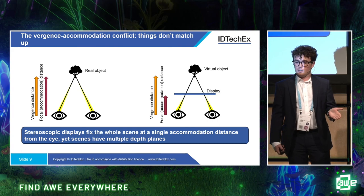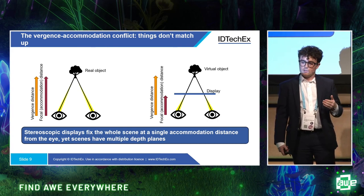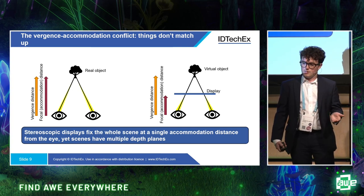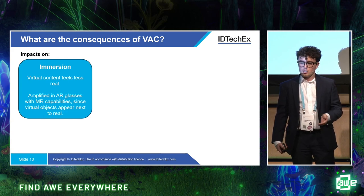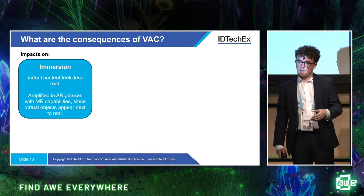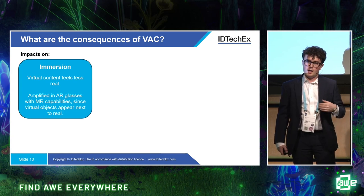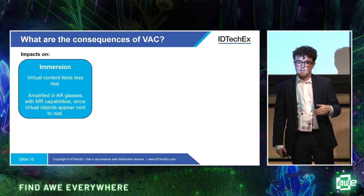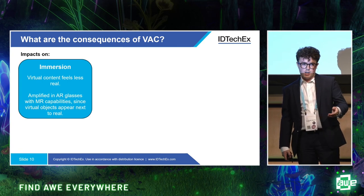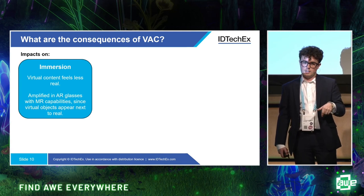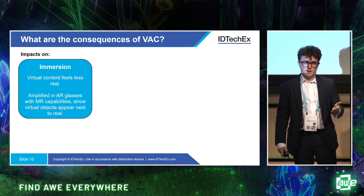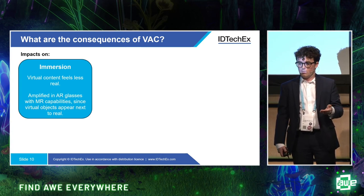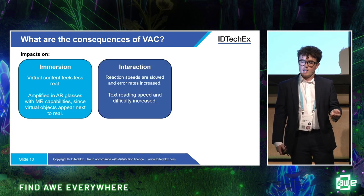When we fix a whole scene at a single accommodation distance from the eye while the vergence system varies, we get a significant mismatch. There are impacts on immersion — virtual content feels less real. This is particularly an issue in AR glasses delivering mixed reality, since virtual objects appear next to real ones. It's strange if an object appears to be two meters away but you have to focus at infinity to interact with it, when it's sitting next to a real-world object.